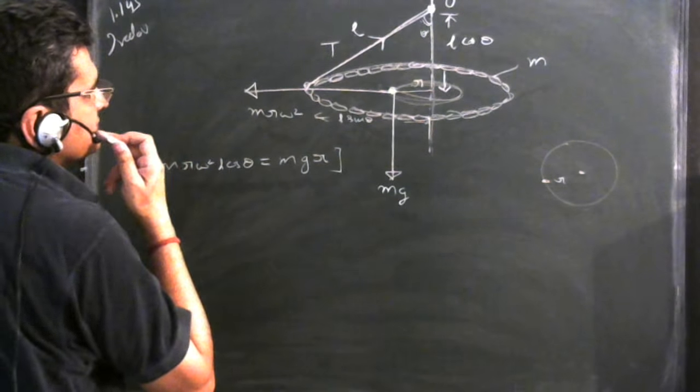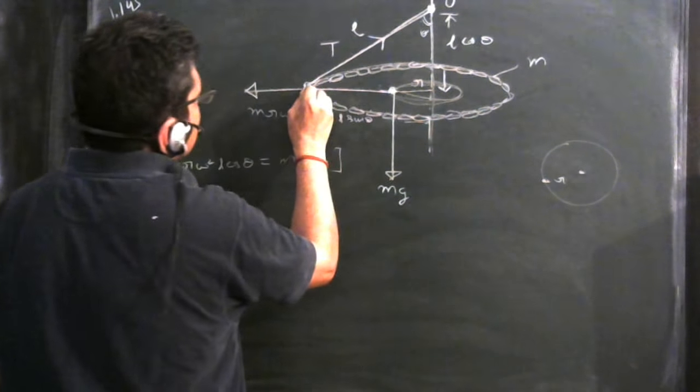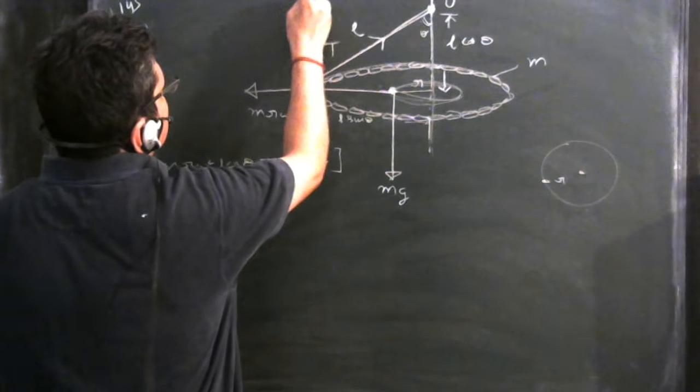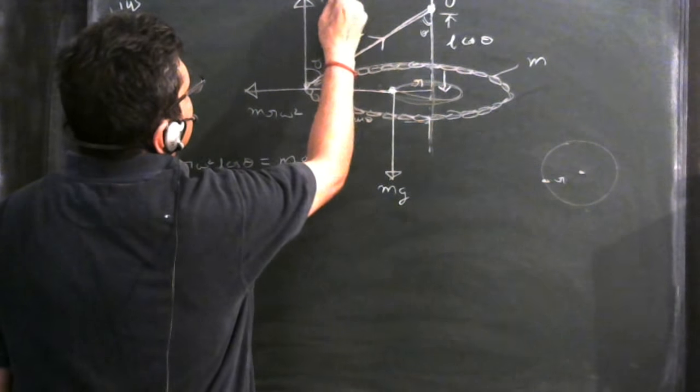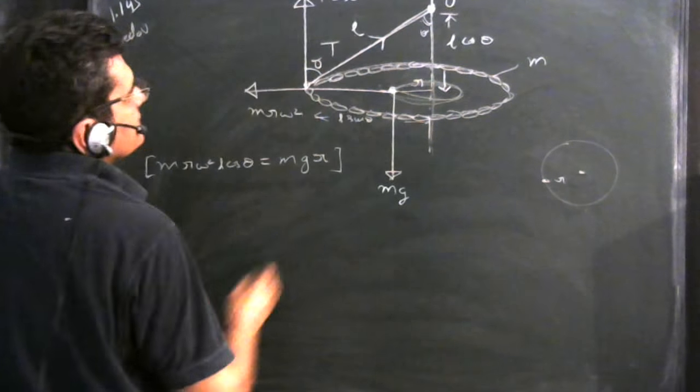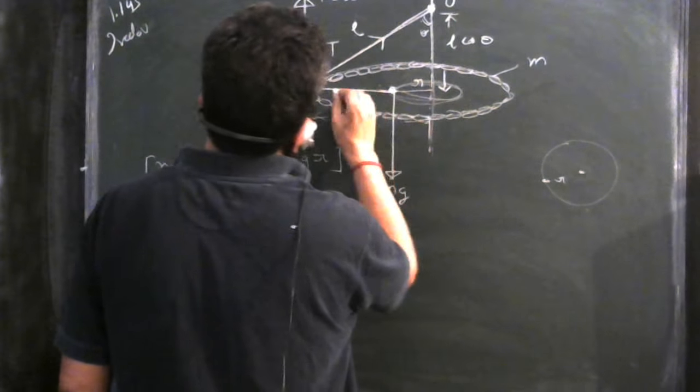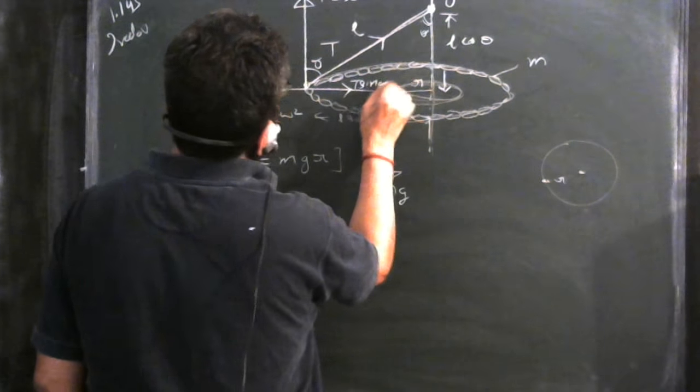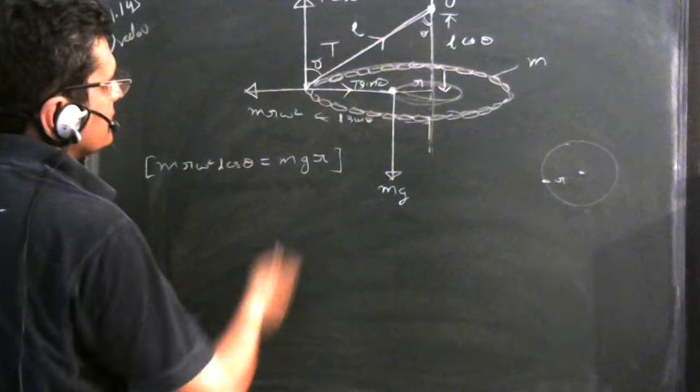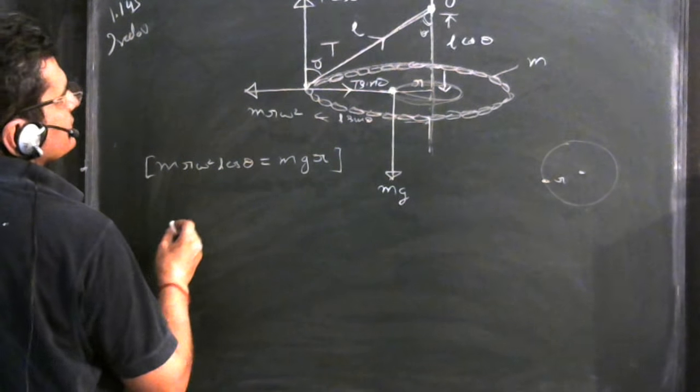Balance the vertical forces. What is the vertical force? This is T, this is theta, this is T cos theta, and the horizontal forces are T sin theta and MR omega square. Equate the vertical and horizontal forces.